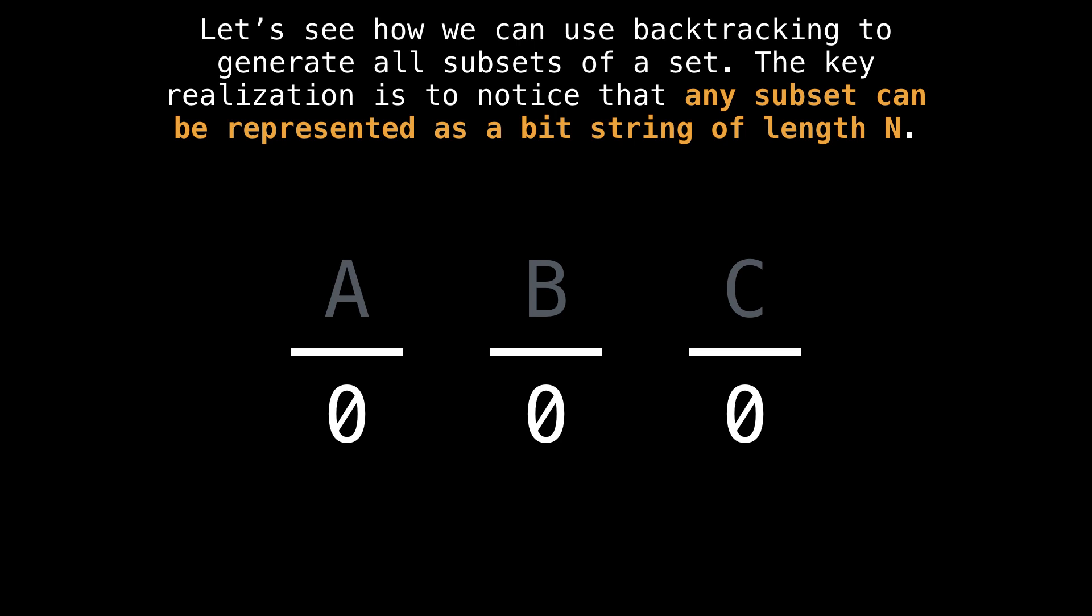For example, consider the bit string 000. If zeros indicate that a particular element was not selected, then none of the elements in this set would have been selected. So we'd get the empty set.